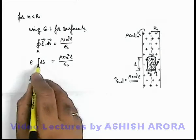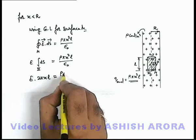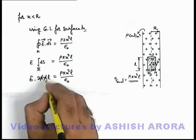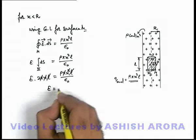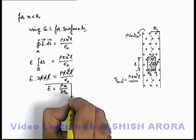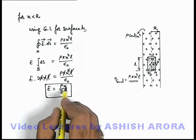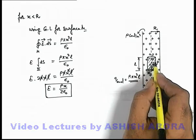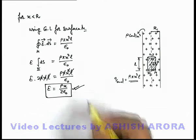This gives E × 2πxl = ρπx²l / ε₀. Now π, x, and l cancel out, so the electric field inside is E = ρx / (2ε₀). This is a result we have already discussed in the section on electrostatics. We have now calculated the electric field inside a uniformly charged long cylinder at a distance x from the central axis, given as E = ρx / (2ε₀) — keep this result at your fingertips.